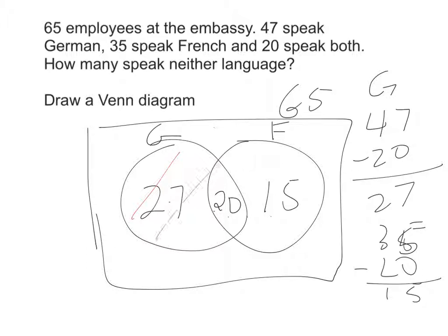Which means there can only be three people that don't exist inside these two circles to make the total of 65.